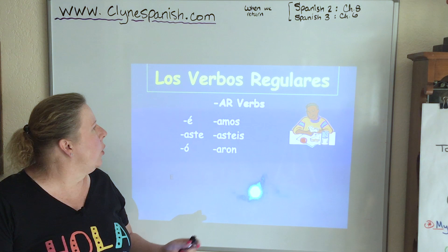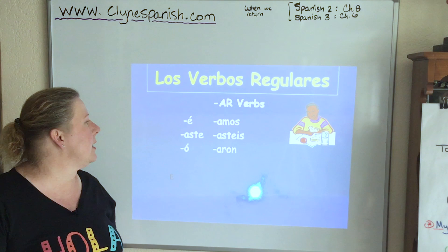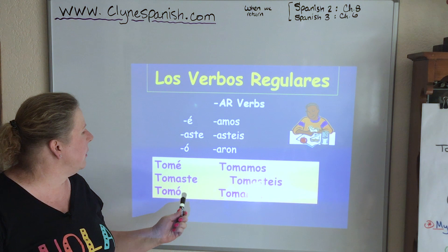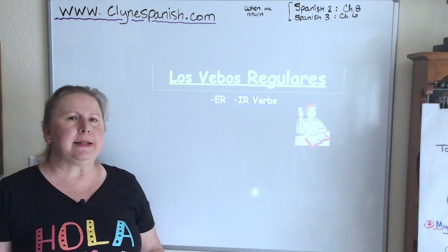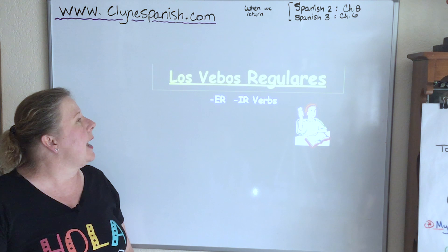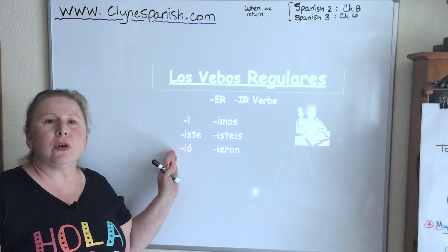Take note that you have an accent mark in the yo form and the él/usted form, showing you the verb tomar: tomé, tomaste, tomó, tomamos, tomasteis, and tomaron. ER and IR verbs in the preterite — remember in the present tense we needed to know if the verb ended in ER or IR, but not so much in the preterite. They have one set of endings: í, iste, ió, imos, isteis, and ieron. The yo form and the ellos/usted form have the accents, just like the regular AR verbs.